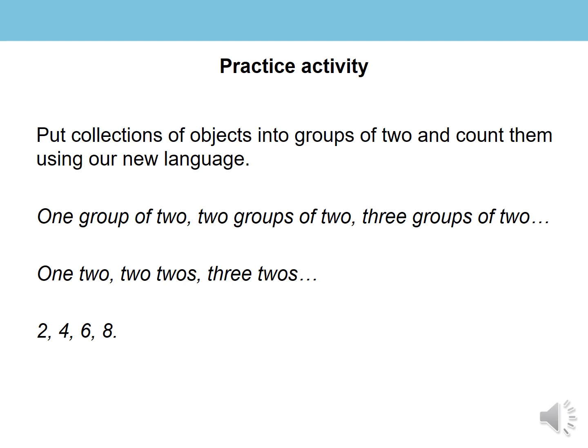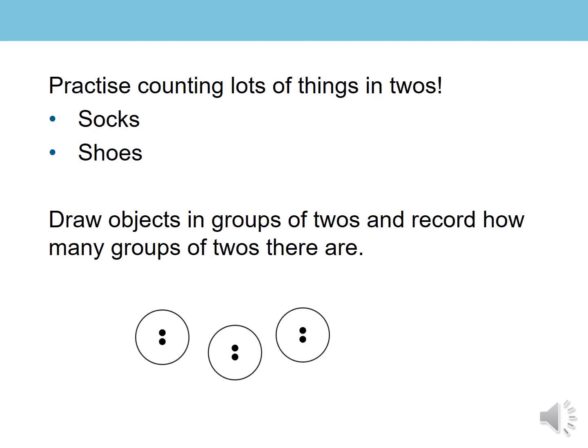So what I would like you to do is to find some groups of objects. It could be anything around your house. It could be pencils, paper clips, pieces of pasta, counters or cubes, whatever you can find. And put them into groups of two. And then count them out by using our new language that we've been learning: one group of two, two groups of two, three groups of two, and so on. When you've organised them into equal groups of two, remember they must always have two in a group, then you can count them in twos by remembering our special pattern of counting the even numbers.